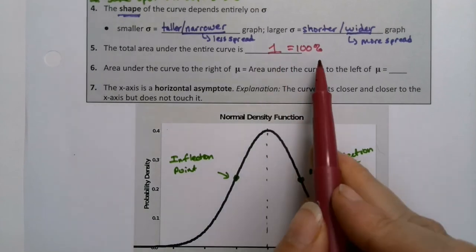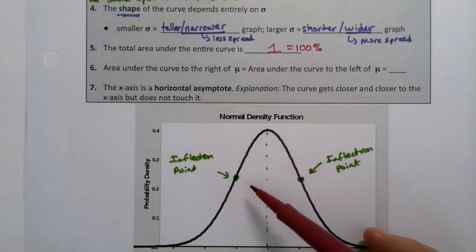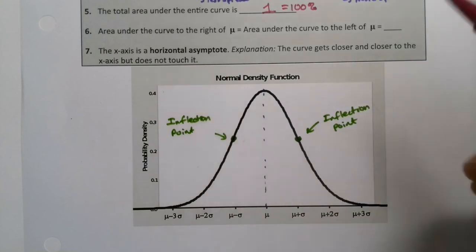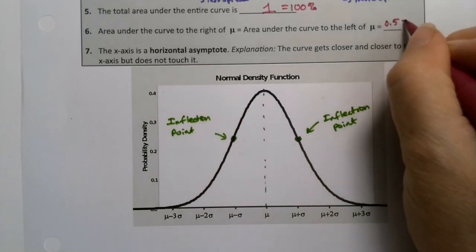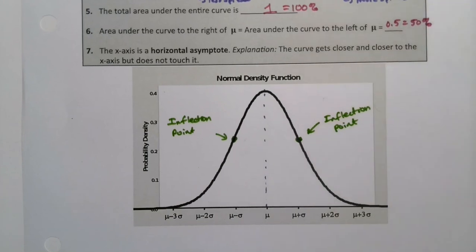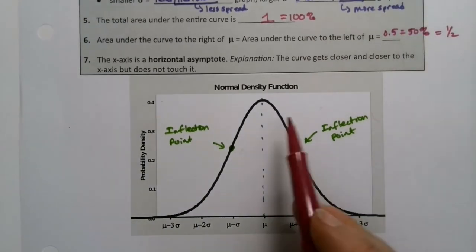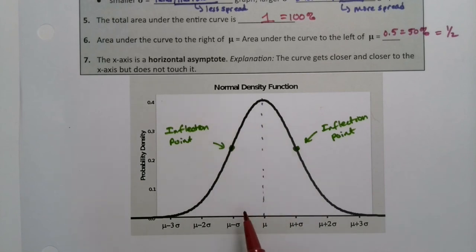So if it's one or 100%, then what's the area to the left of the mean? Well, the mean is the center. So the area to the left of that mean or the area to the right of that mean, either one, should both be 0.5 or 50%, half the curve. You got half the curve over here, half the curve over here. The area of each part is a half in order to make the whole thing one.